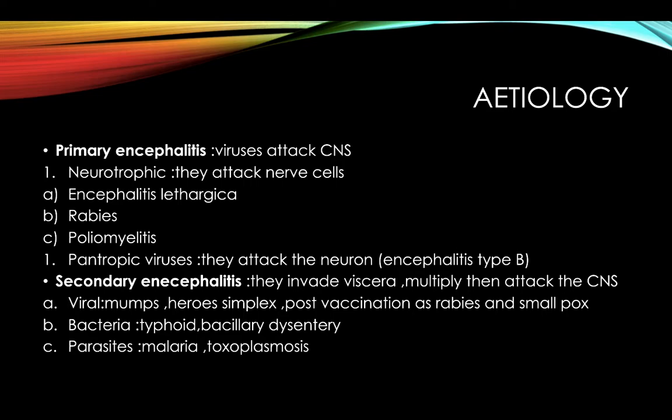Neurotrophic viruses attack nerve cells, while pantrophic viruses attack neurons. Examples of neurotrophic encephalitis include encephalitis lethargica, rabies, and poliomyelitis.